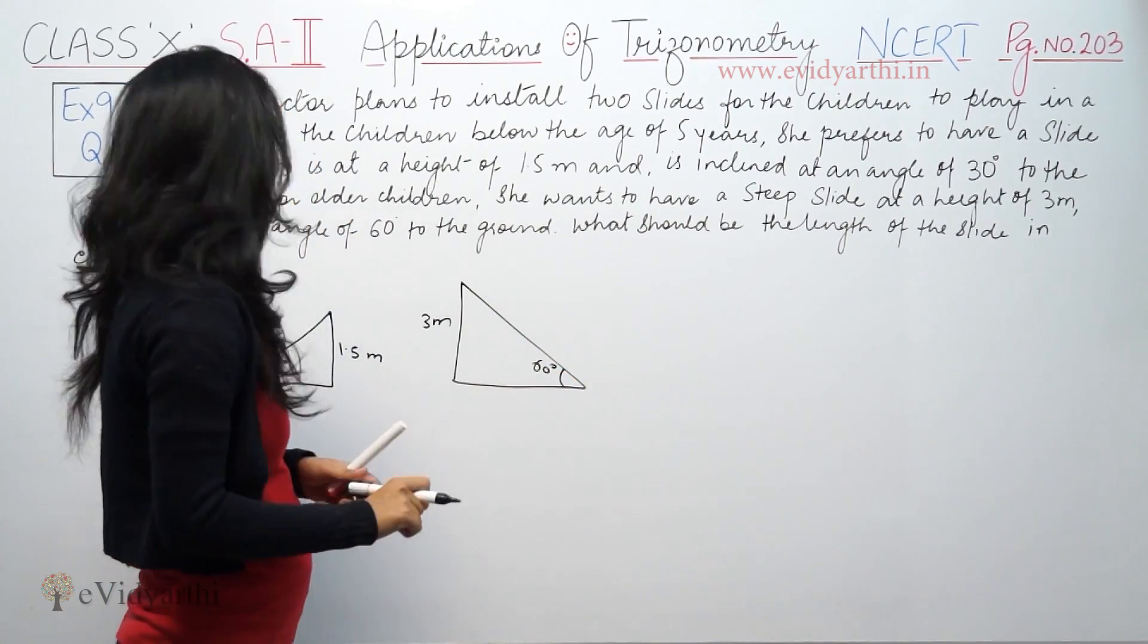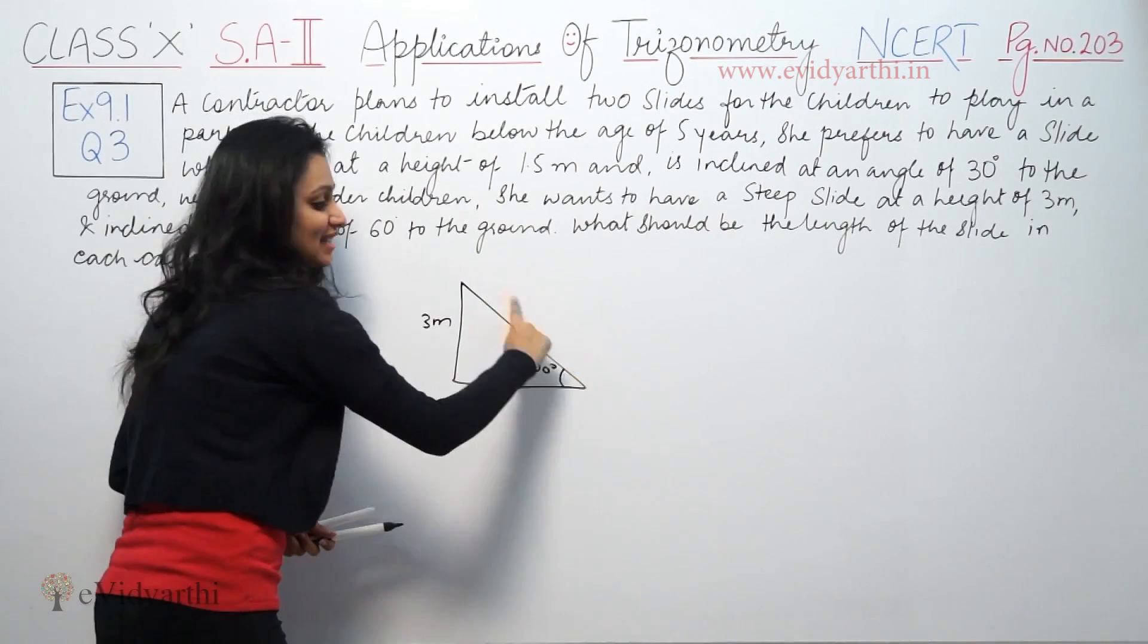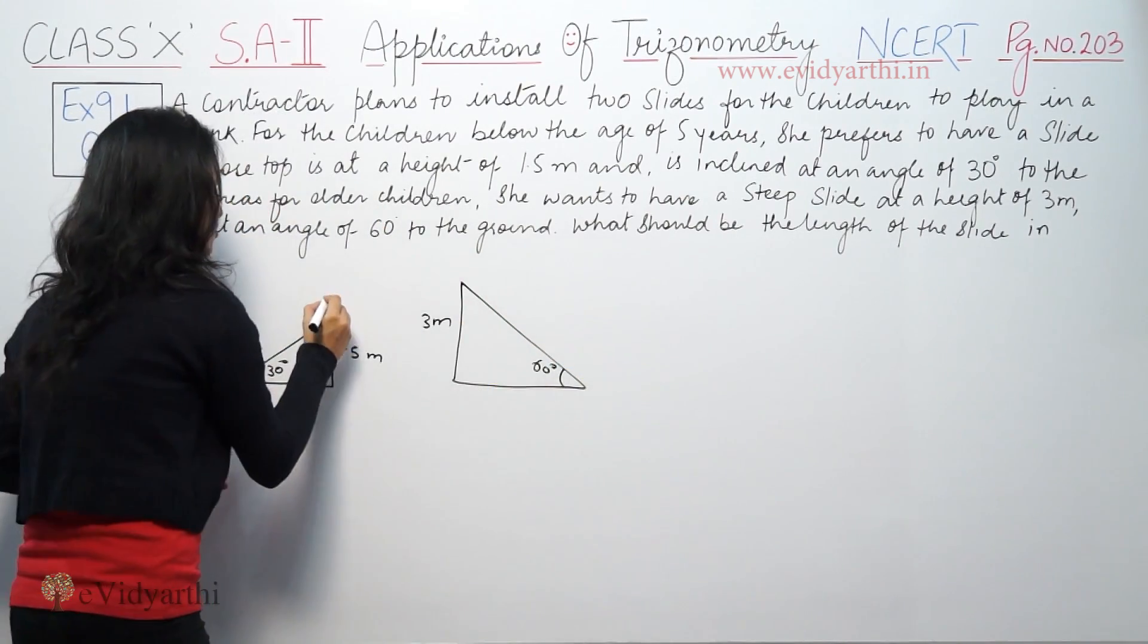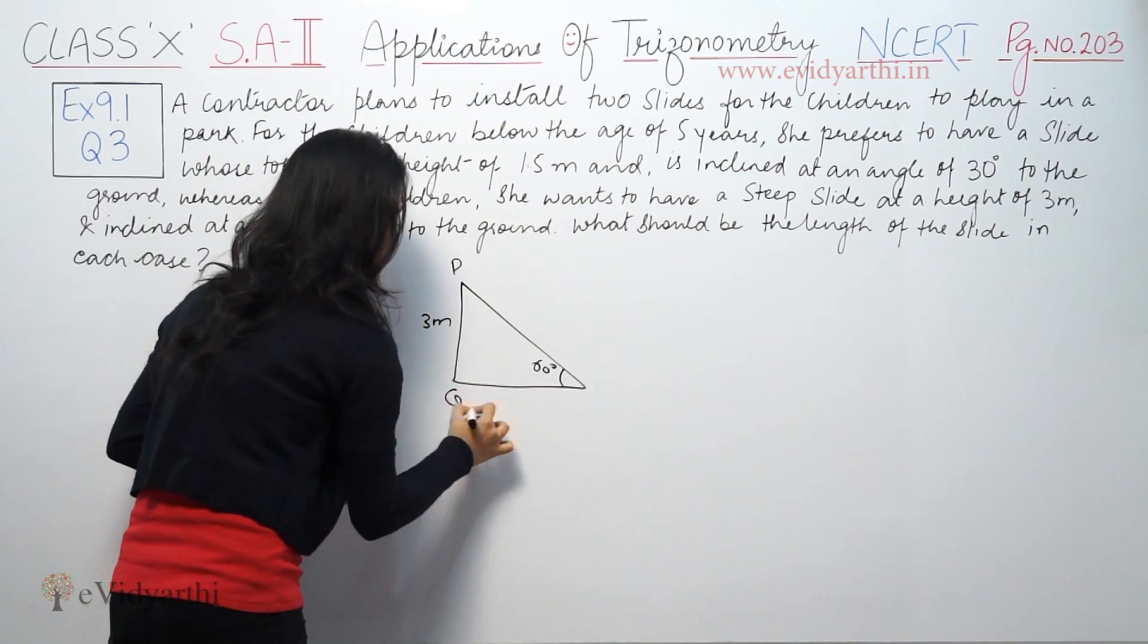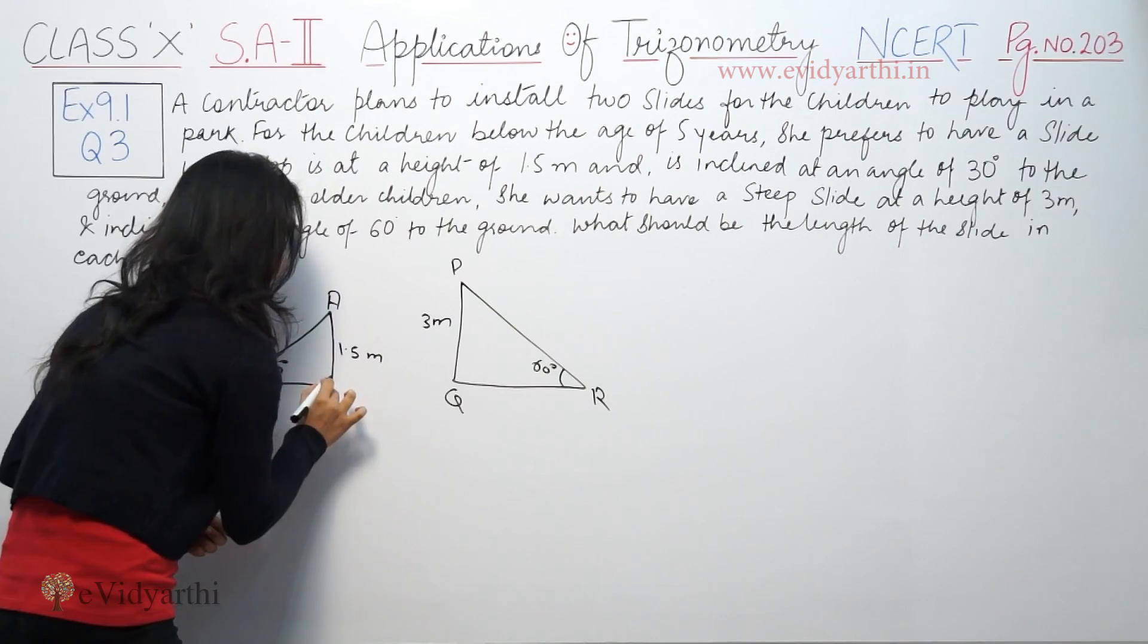So what should be the length of the slide in each case? We have two cases. This is A, B, C. This is P, Q, R. This is a right angle.